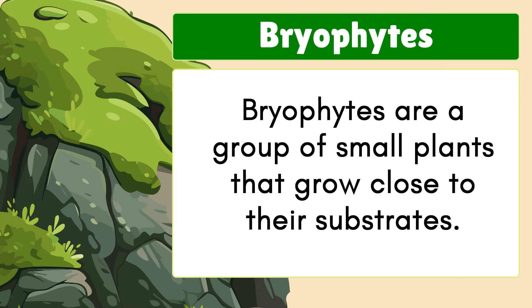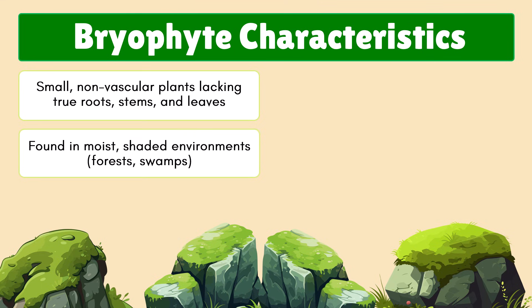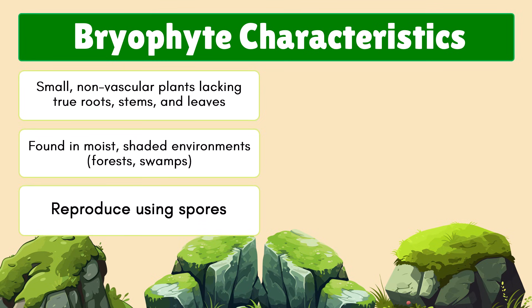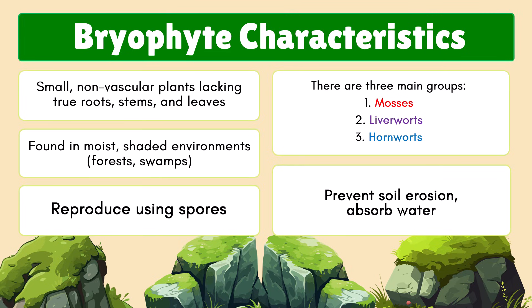Next are Bryophytes — a group of small plants that grow very close to their substrate. They are small, non-vascular plants, meaning they do not have xylem and phloem, and lack true roots or stems. They are found in moist and shady places like forests and swamps, and they reproduce using spores. The three main groups are mosses, which have a leafy appearance; liverworts, which are flat and lobe-shaped; and hornworts, which have horn-shaped sporophytes. They are crucial for the ecosystem as they prevent soil erosion, help in water absorption, and provide habitat for animals.